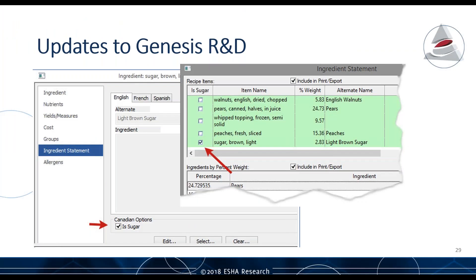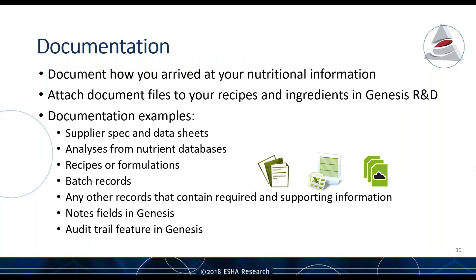In using Genesis, you want to capture the information necessary to support the values you report on your labels. You can attach document files directly to your recipes and ingredients in Genesis. Forms of documentation to include: supplier spec sheets, nutrient database analyses, your base formulas and recipes, notes on how you developed the formula, batch records, lab results, and the audit trail in Genesis that indicates changes made by whom and when. Perform your due diligence and maintain proper records to support your information.